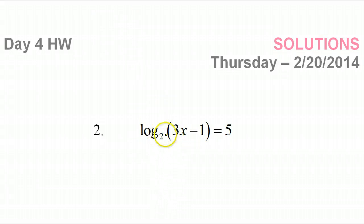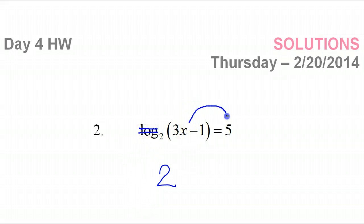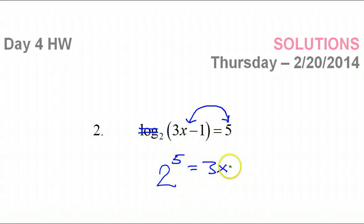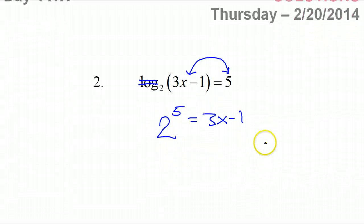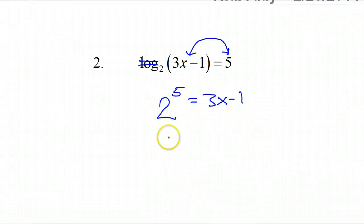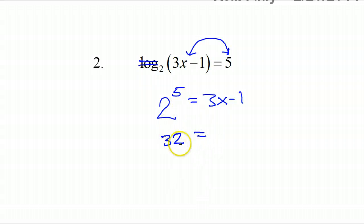In exponent form, see 2 is the base — start with that, bring it down, straight down. In exponent form, there is no log, so forget about that. These two things will trade places: when this 5 comes over, it'll be the power. So that gives 3x minus 1 on this side. 2 to the 5th power — you could use your chart or a calculator — is 32. So 32 is equal to 3x minus 1.